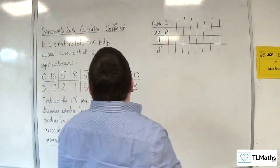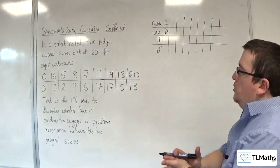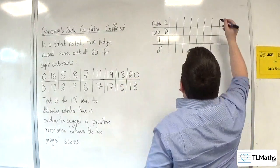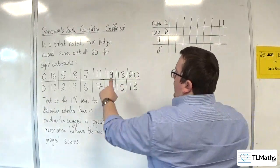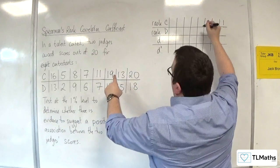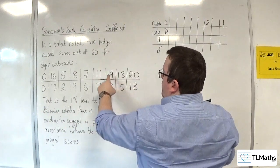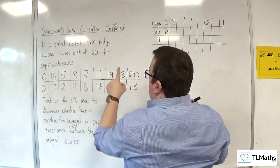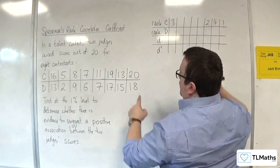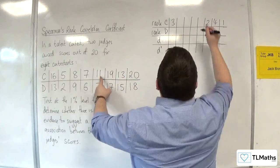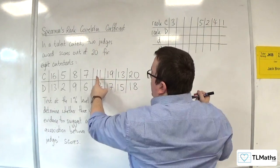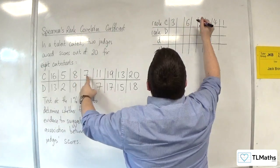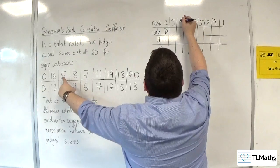So we're going to rank C first, with 20 being the strongest. So 20 comes in first, then the 19 which is second, then the 16 which is third, then the 13 which is fourth, then the 11 which is fifth, then the 8 which is sixth, then 7 is seventh, and 5 is eighth.